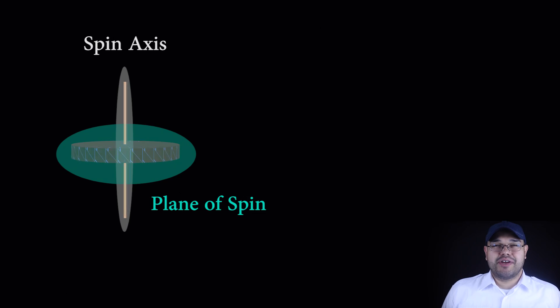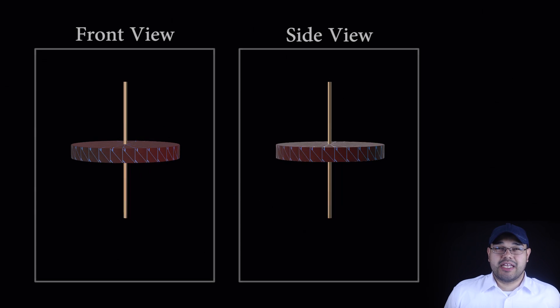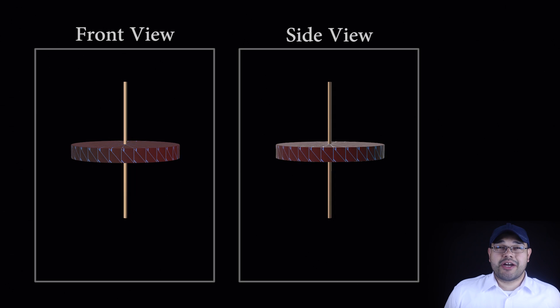Precession is a behavior of a gyro that follows from forcing the gyro out of its plane of spin. If we apply a torque to the gyro to rotate it out of its plane of spin, the momentum of the gyro moves the torque by 90 degrees in the direction of the spin.